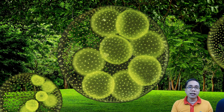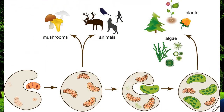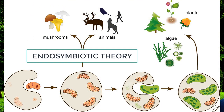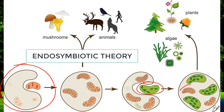They started existing and flourishing. Can you still recall that theory? It's called the endosymbiotic theory, where a larger prokaryote engulfed a smaller prokaryote, and they started some sort of a mutual relationship where the smaller prokaryote evolved into the chloroplast and the mitochondria.